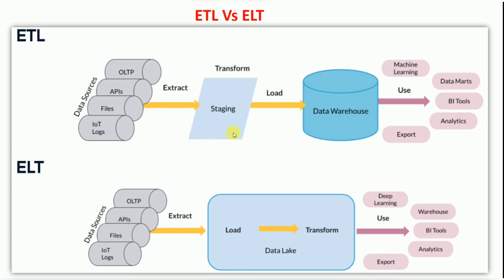In the staging or transform area, you do data validation — handling junk data, invalid data, metadata — all validations happen there. Metadata gets changed, data gets changed, and finally valid data is loaded into the warehouse. Reporting tools or business users connect and analyze the data. That's the traditional ETL approach. When it comes to ELT, going back about 10 years, Oracle Data Integrator was introduced and its primary usage was the ELT approach.